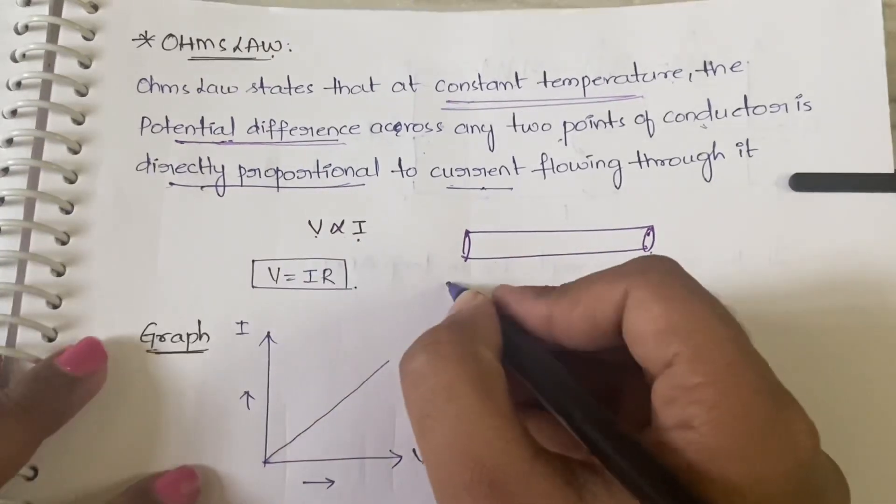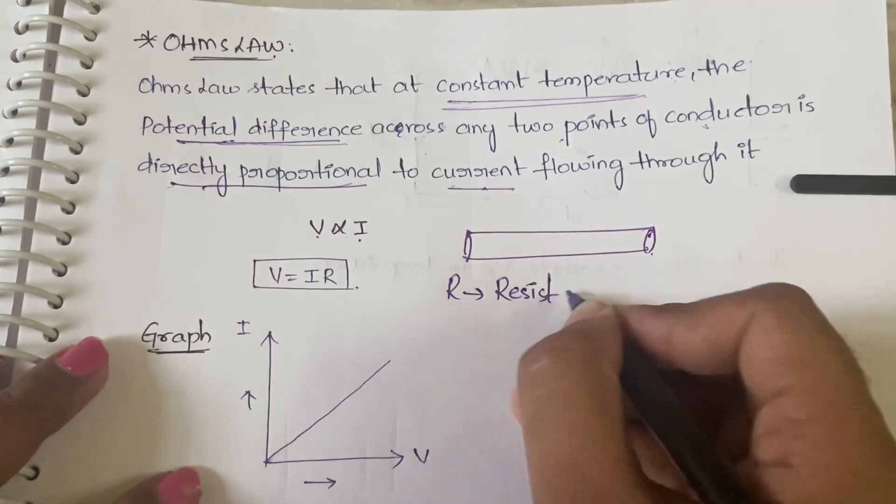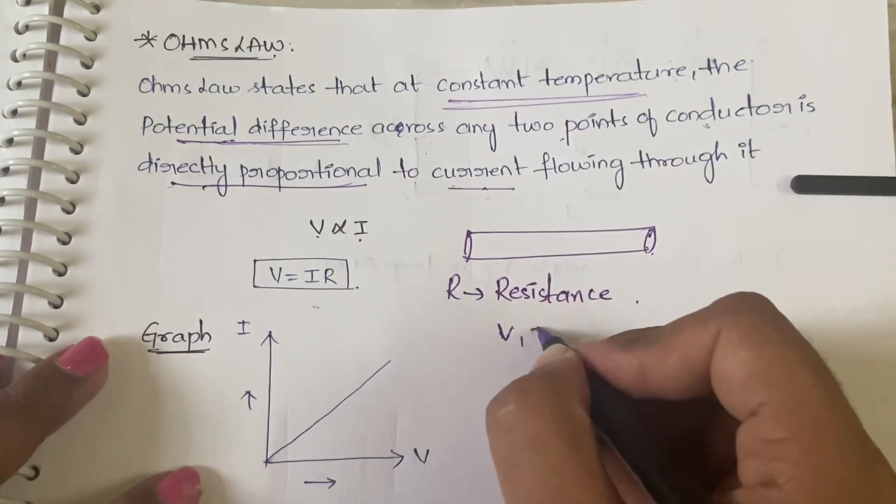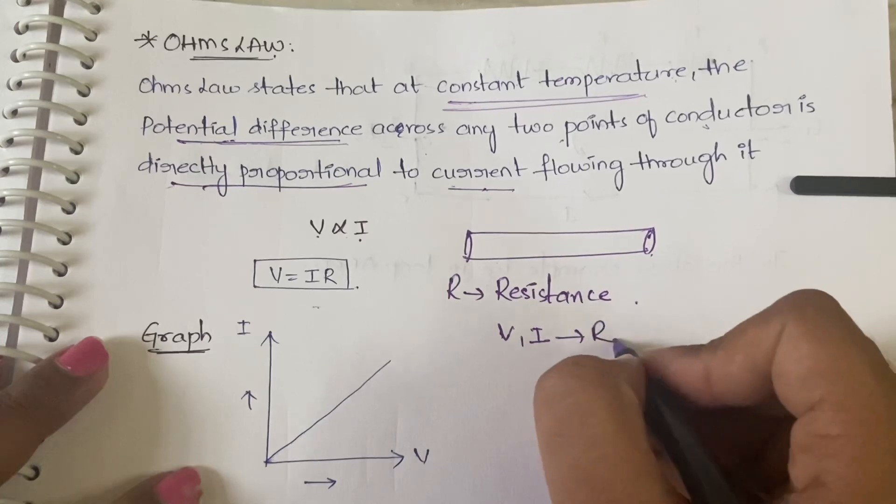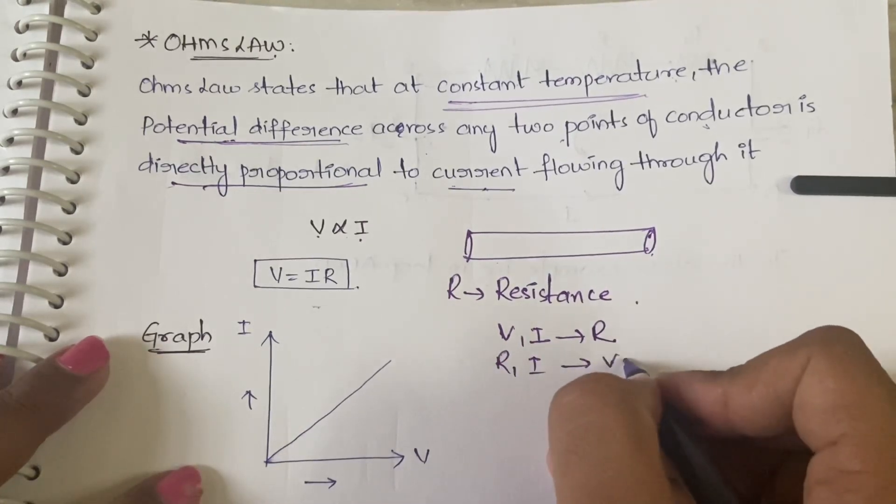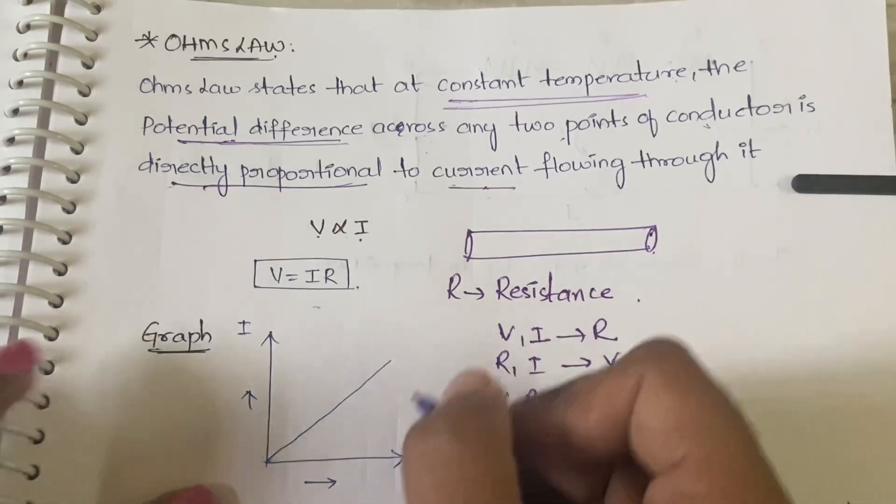So this Ohm's Law can be used when you know V and I and you have to find R, or you know R and I and you need to find V, or you know V and R and you need to find I. In any of these cases you can use this Ohm's Law.